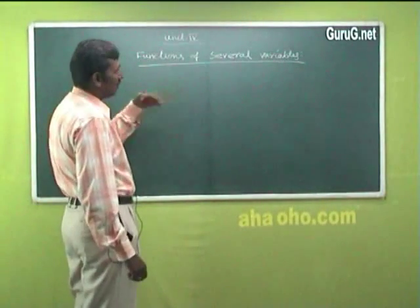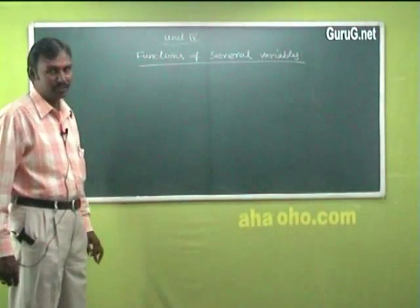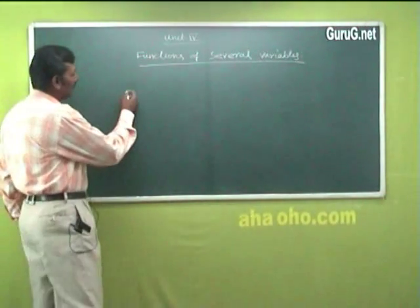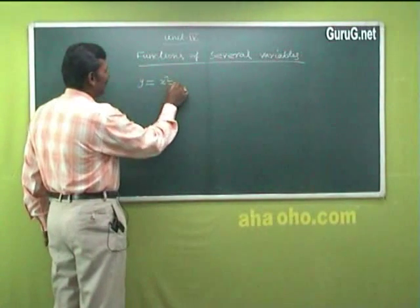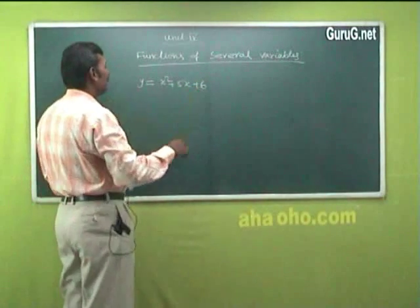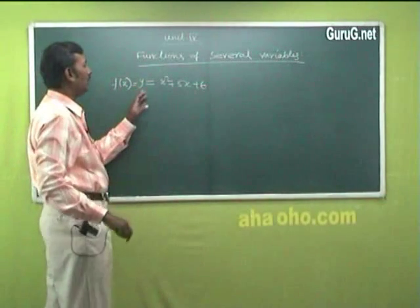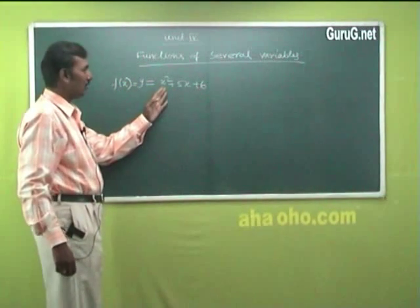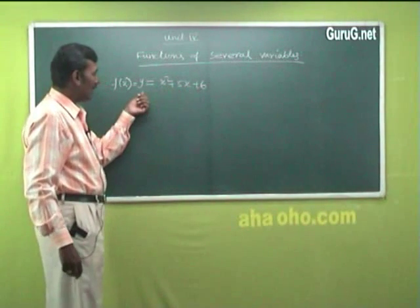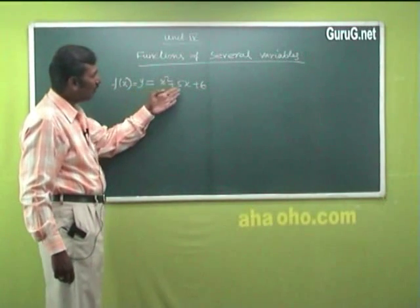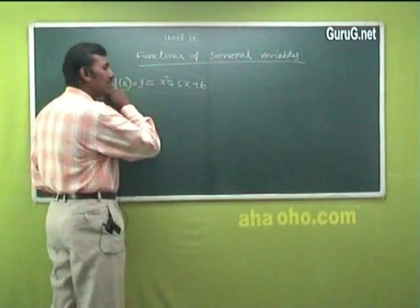Unit 4: Functions of Several Variables. What do you mean by functions of several variables? We all know the function of a single variable. For example, y = x² + 5x + 6. So y is a function — I will take it as f(x). So y = f(x) is a function of the variable x, with only one independent variable. So x is an independent variable and y is a dependent variable.